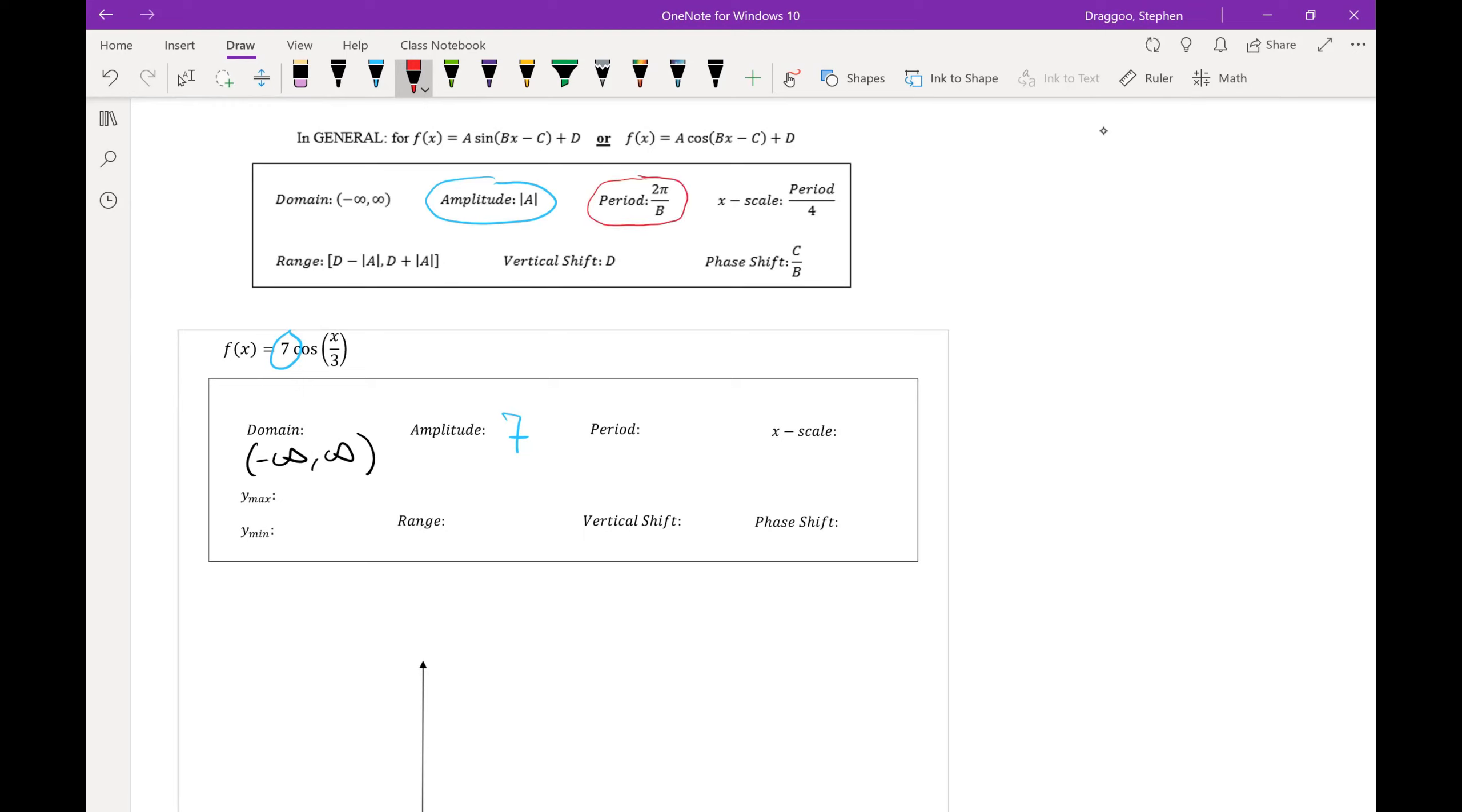Next I want the period, which is equal to 2π over b. And here we know that b is one third. Since that interior is x over three, it means b is one third. So the period is 2π divided by one third, which is 6π.